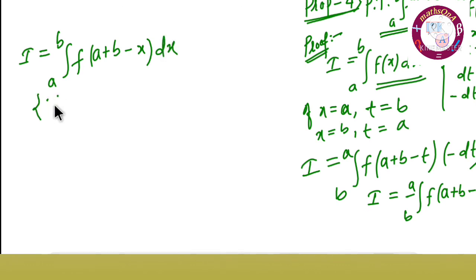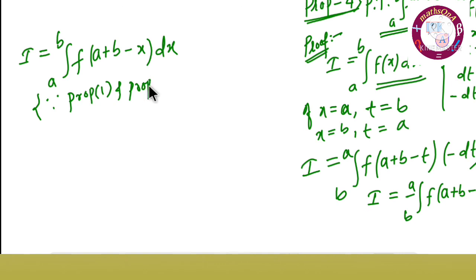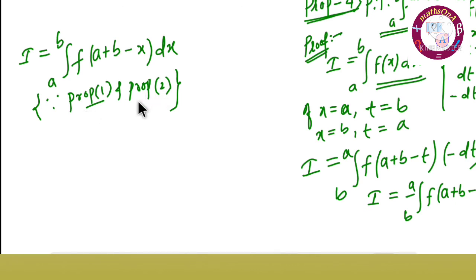By property one and property two — property one says f of x equals f of t, and property two says if you interchange the limits it becomes minus — we conclude: